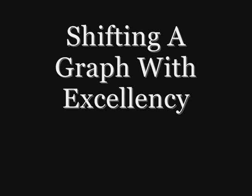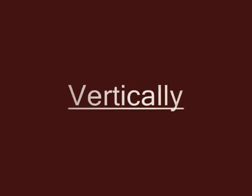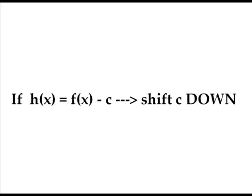In this lesson, you will learn how to shift a graph. There are two ways to shift a graph. The first one is vertically, the second is horizontally. While shifting vertically, h(x) is equal to f(x) plus c, and you shift c up. If h(x) is equal to f(x) minus c, shift c down.